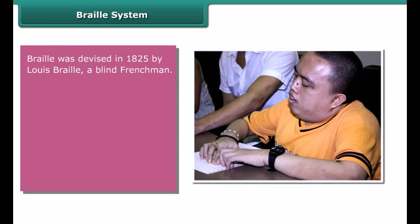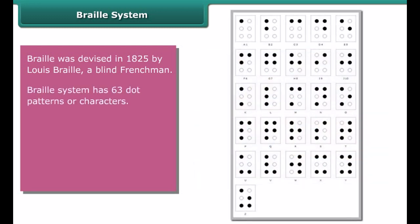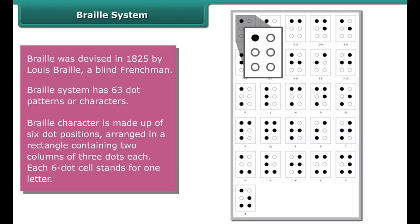Include vitamin A rich foods like carrots, eggs, milk, curd, cheese, and fruits such as papaya and mango in your balanced diet.